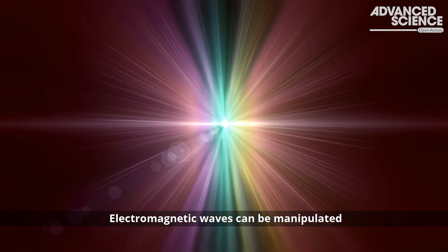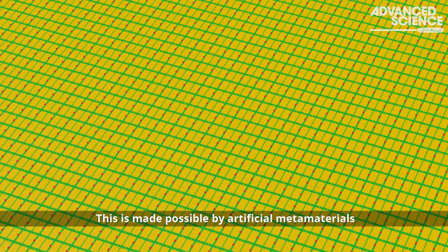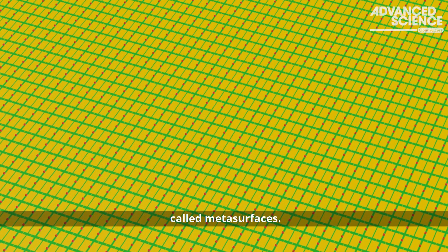Electromagnetic waves can be manipulated to result in many interesting physical phenomena, such as optical illusions. This is made possible by artificial metamaterials, called metasurfaces.